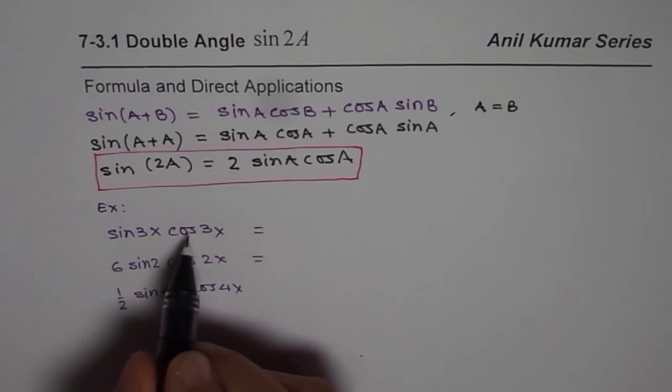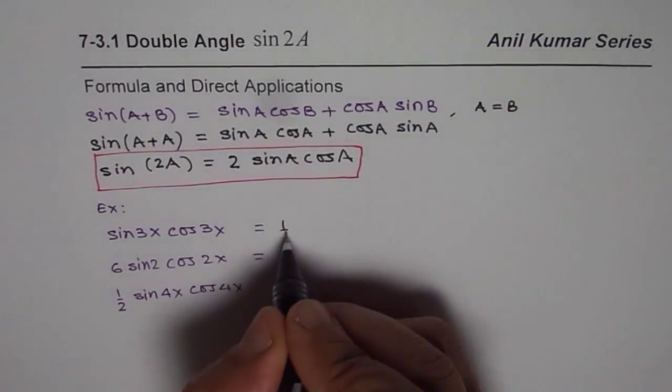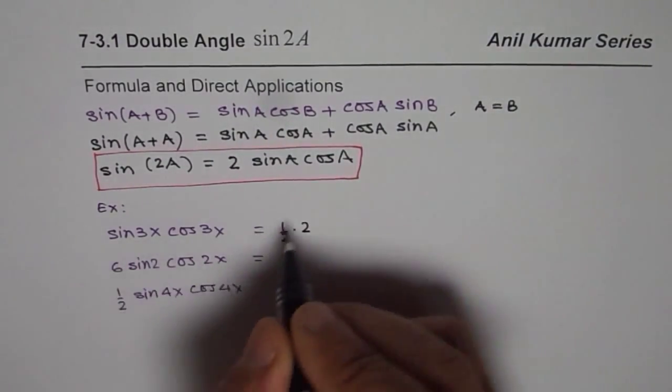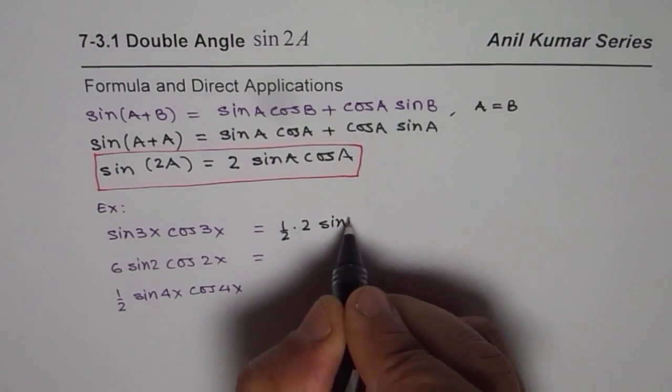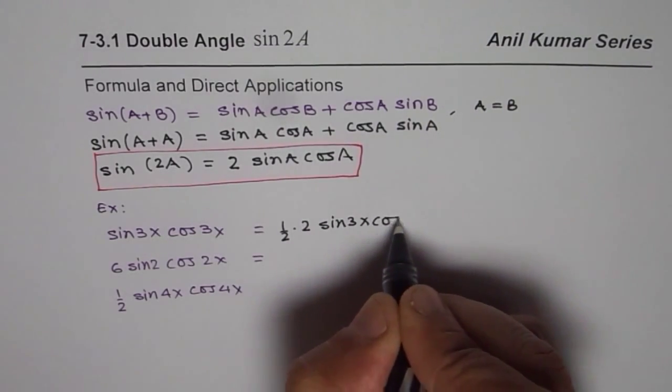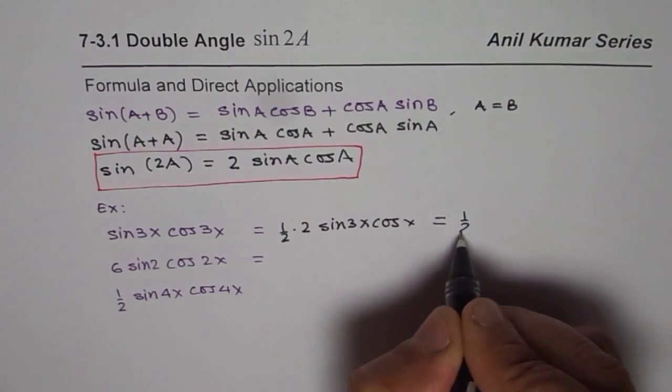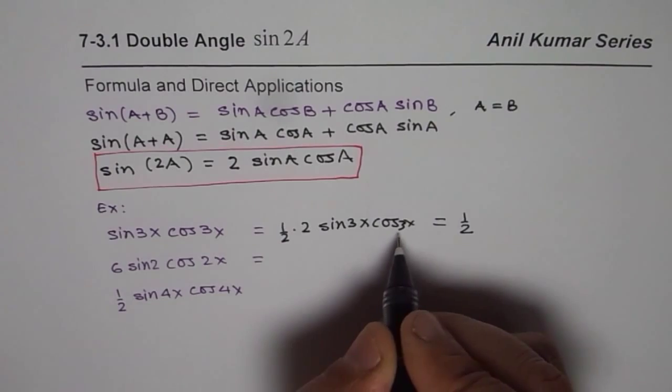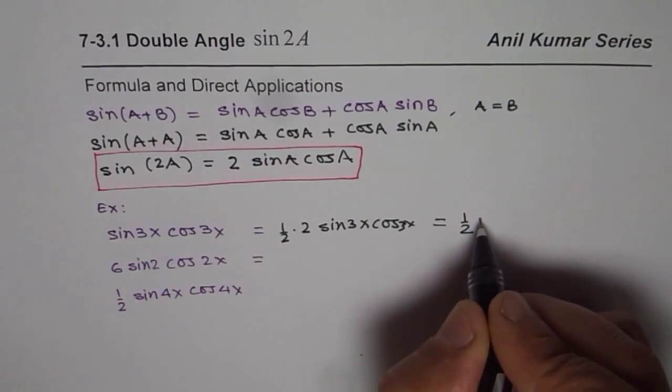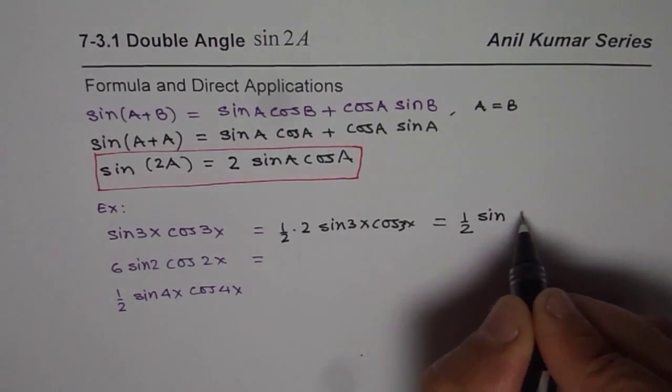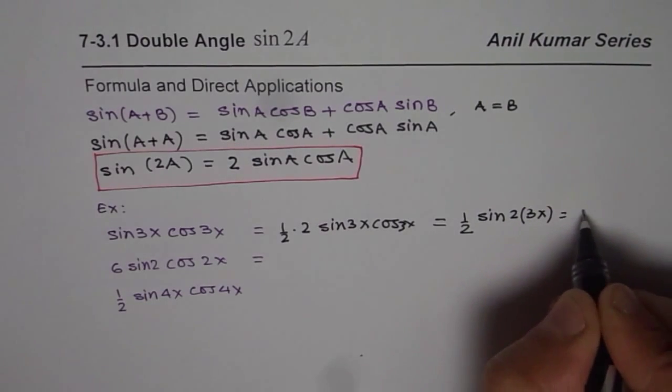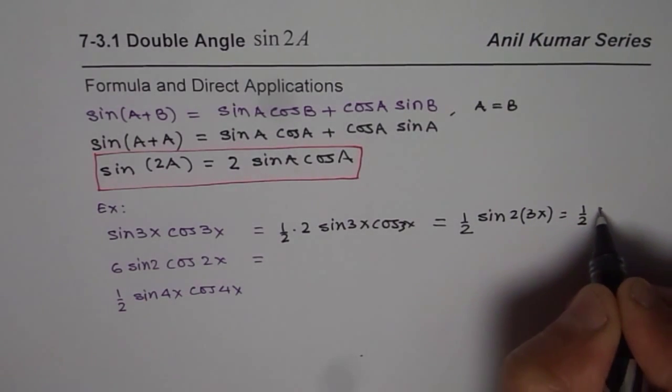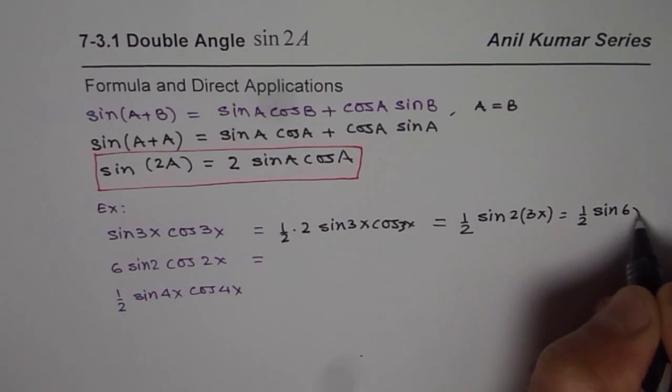So we could write this expression as half times 2, and then sine 3x cos 3x, which could be written as half times. Now 2 sin 3x cos 3x will be twice that angle. So we can write this as sine of twice 3x, which will be half of sine 6x.